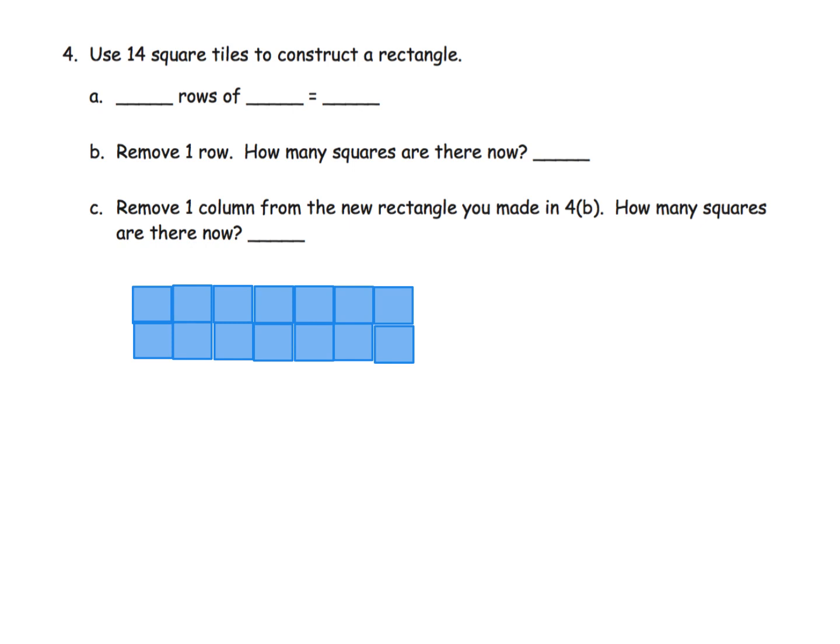Last problem for this video. Use 14 square tiles to construct a rectangle. Woohoo, I did. Now, the way I built it, this is not the only way to build it, but the way I built it was I did two rows of seven. And we can see that that's 14 tiles. Now, parents and teachers, don't just jump there. You may need to pause the video, or you may need to really let your students count these tiles to be sure, because we don't want them to just start running into rules and things to memorize. Let them count, let them touch.